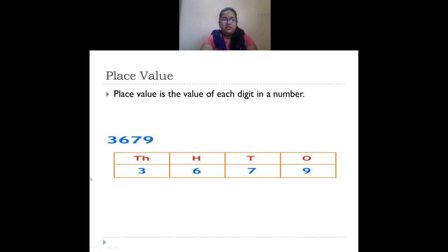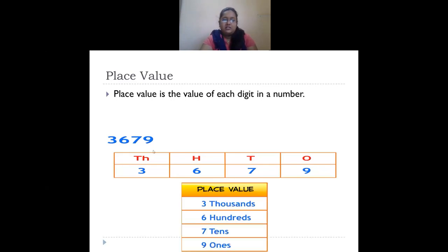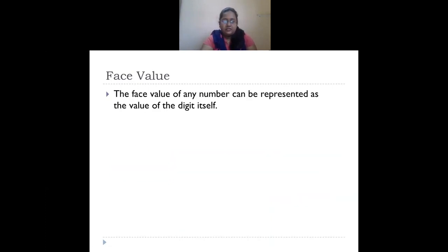The place value of each digit is determined by the position in which the digit sits. Nine is in ones place, so its place value is nine ones, or nine. Seven is in tens place, so its place value is seven tens, which is seventy. Six is in hundreds place, so its place value is six hundreds, or six hundred. Three is in thousands place, so its place value is three thousands, or three thousand.